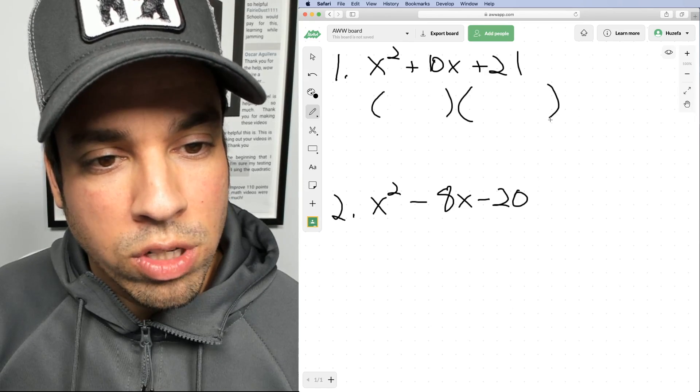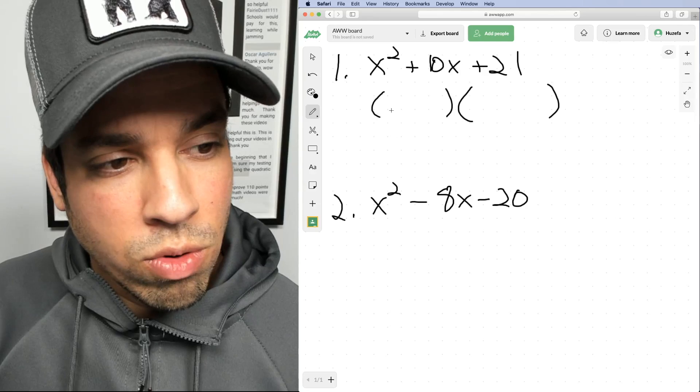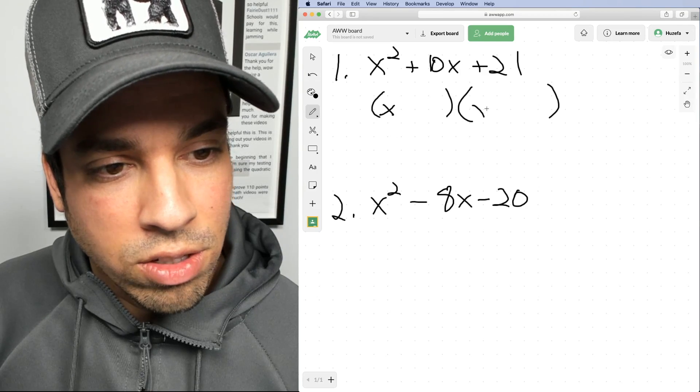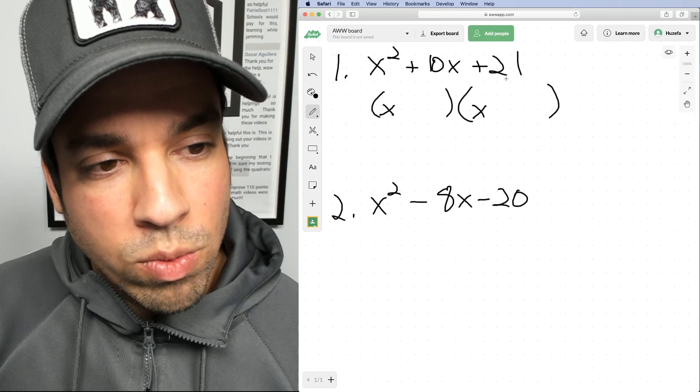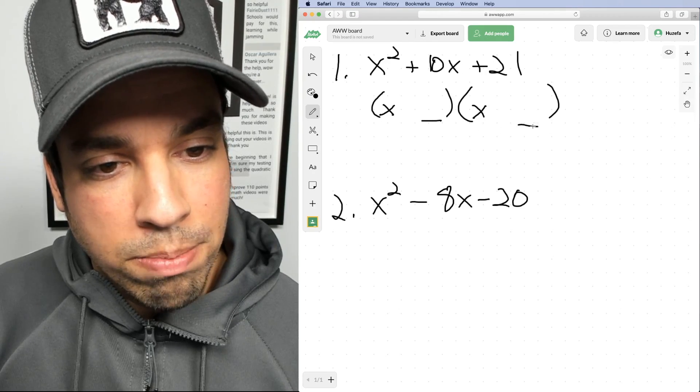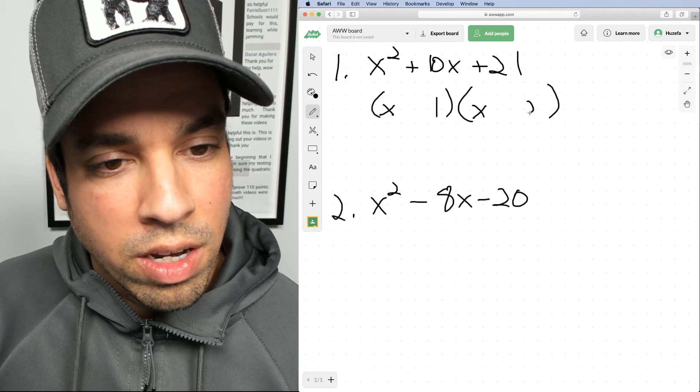The way we want to think about this is: what is going to multiply to give me that x squared? Well, of course, that's just going to be x and x, so that's pretty straightforward. And then what's going to multiply to give me the 21? Well, that's going to go here and here. There's a problem, right? It's not that simple. For example, I could just put a 1 and 21 there.